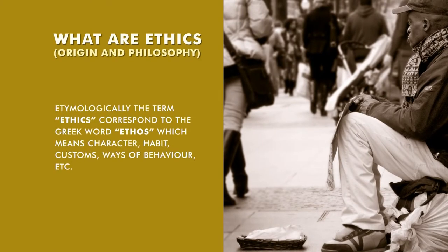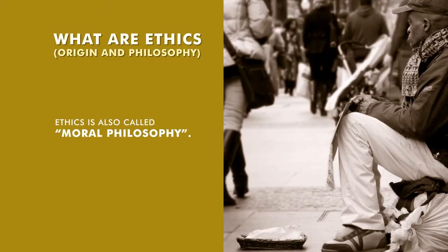If you see the etymological meaning, ethics is basically originated from a Greek word called ethos. The term ethics has originated from the Greek word ethos, which means character, habit, customs, or way of behavior — how we behave as well as whether that behavior is acceptable or not. It is in tune with the norms of the society, of the community of which we are part. Is it moral or not? Sometimes ethics are also known as moral philosophy.